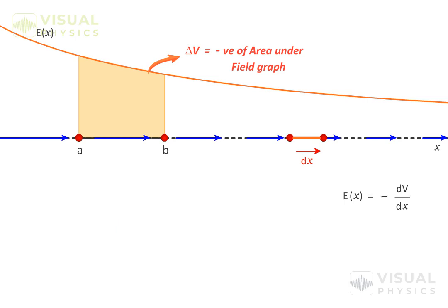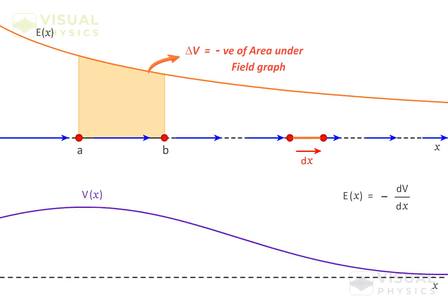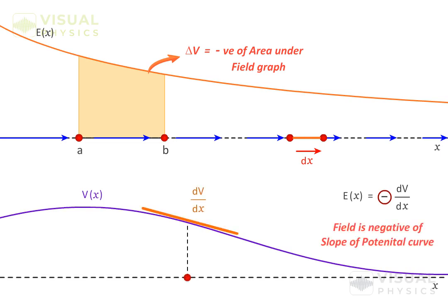If we plot the potential graph along an axis, then the negative of the slope of the potential curve at a point gives the electric field at that point along that axis. Note that the function of potential along an axis gives us only the component of electric field along that axis.